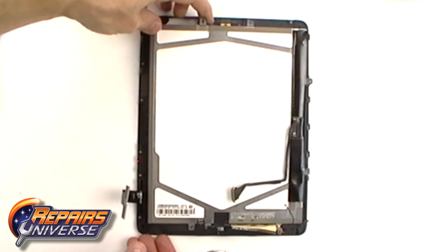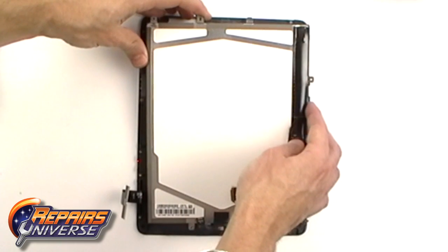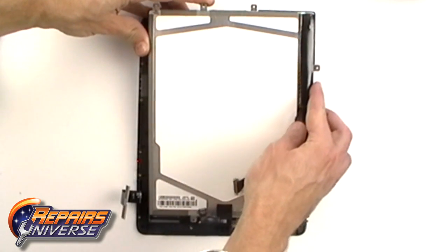You can now gently lift out the LCD screen using the metal tags on the sides.